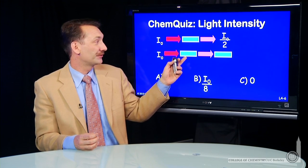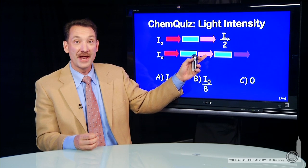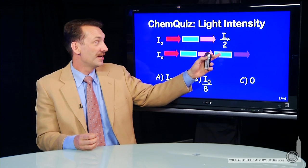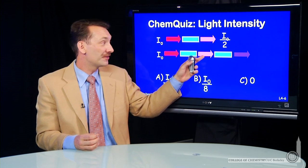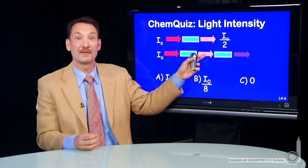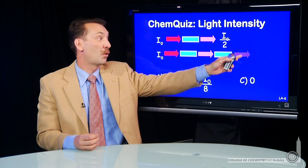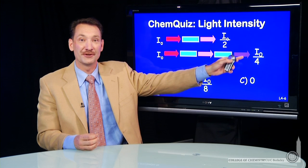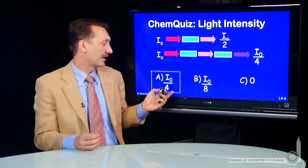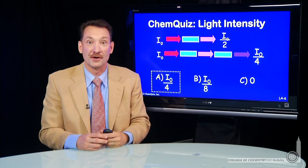Well, if the first filter reduces it by 1/2, so it's half as bright here, a second filter would make this half as bright. So you'd go from half the original intensity to a quarter of the original intensity after two filters, so the correct answer here is A, 1/4 the original intensity.